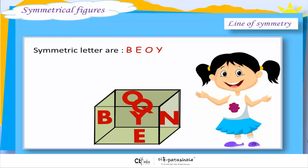Symmetric letters are B, E, O, Y. Fraction of symmetric letters on the cube is equal to 4 by 6.